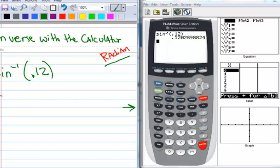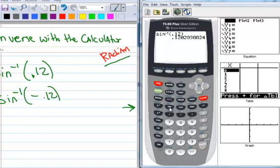How about the inverse sine of negative 0.12? Let's do that one. Second sine. There we go. Negative 0.12. And we get negative 0.12. Good. It's just a coincidence that those digits are very similar.